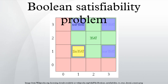For some versions of the SAT problem, it is useful to define the notion of a generalized conjunctive normal form formula, as a conjunction of arbitrarily many generalized clauses, the latter being of the form R(l1, ..., ln) for some Boolean operator R and literals li. Different sets of allowed Boolean operators lead to different problem versions.